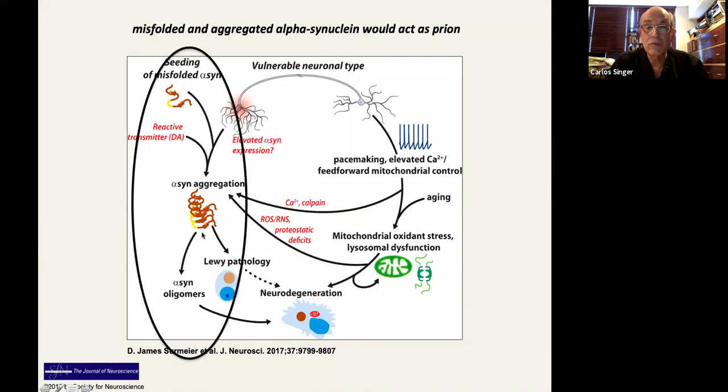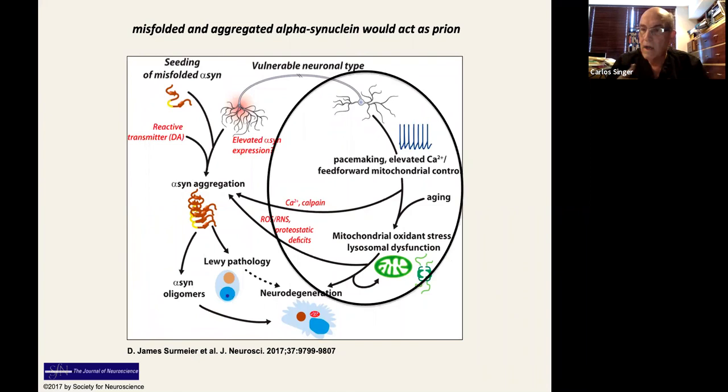Either way, there is alpha-synuclein aggregation, Lewy body pathology, further changes of neurodegeneration, always contributed by a number of other things that are happening inside the neuron, such as increased calcium influx into the cytosol, mitochondrial dysfunction, lysosomal dysfunction, all of the things that we mentioned. And this message being transmitted from cell to cell via a prion mechanism of seeding of the protein by the misfolded alpha-synuclein.